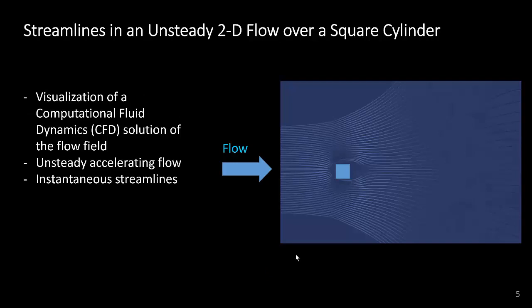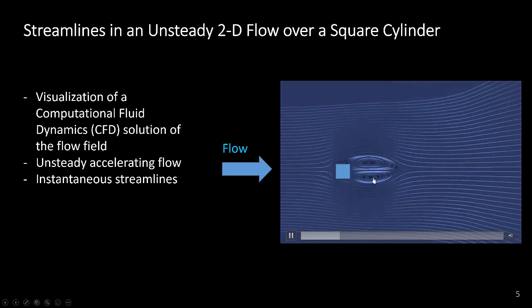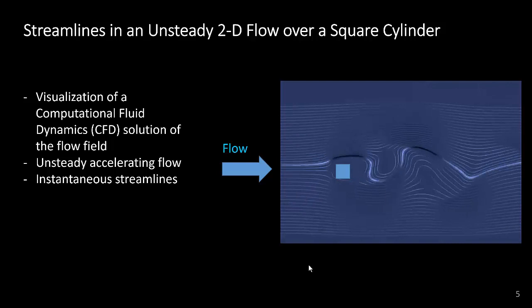This is an example of using streamlines to visualize an unsteady two dimensional flow. This is flow over a square cylinder obtained from a computational fluid dynamics solution of the flow field. We'll talk more about where this type of solution comes from in chapter four. Now, let me just start the video here. What we have is a flow accelerating from left to right. And initially you can see two recirculation zones behind the cylinder. And then eventually they go unsteady and we get vortex shedding.